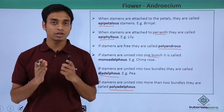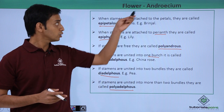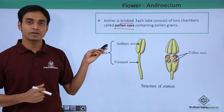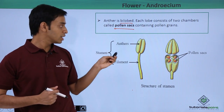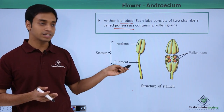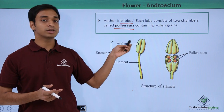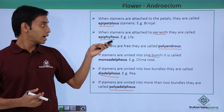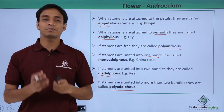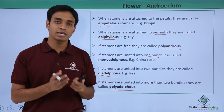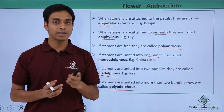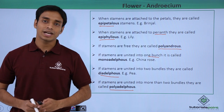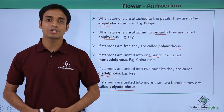In this video, we have discussed the first essential whorl of a typical flower — the androecium, the male reproductive part. We covered the structure of the androecium: it consists of stamens made up of the filament and the bilobed anther, which contains pollen sacs holding the pollen grains. We also discussed the different types of androecium named based on whether stamens are united with petals, perianth, remain free, or are grouped in bunches. I hope you liked and understood this video. Thank you.